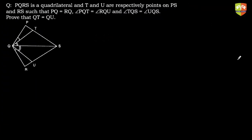Hello friends and welcome to another session on problem solving. We are doing congruent triangles. The question says PQRS is a quadrilateral, and T and U are respectively points on PS and RS such that PQ equals RQ — this side is equal to this side. Given angle PQT equals angle RQU, so these two triangles are related. These two angles are given equal, and we have to prove that QT equals QU.